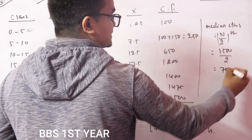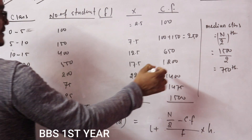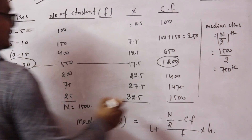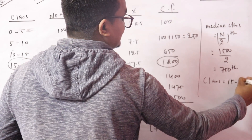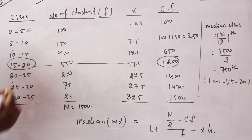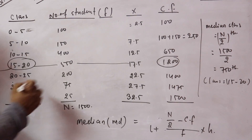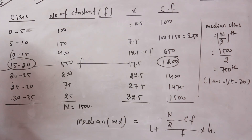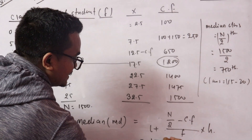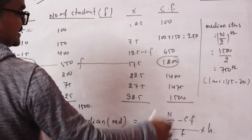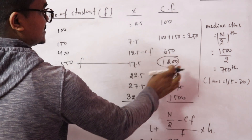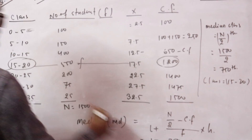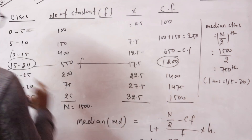n/2 = 750, so the median class is 15 to 20. L = 15, n/2 = 750, CF (preceding cumulative frequency) = 650, F = 550, h (class width) = 5.